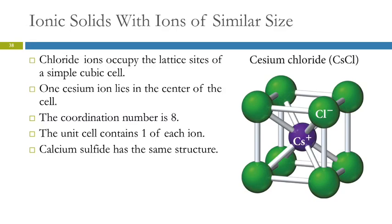Let's look at ionic solids where the ions are similar in size. An example is cesium chloride. The cesium ion and the chloride ion are similar in size, so we can put those together in a lattice and they can occupy the sites of a simple cubic lattice. We've got one cesium atom in the center of the cell and chloride ions at each corner. The coordination number here is eight. The unit cell contains one of each ion — the one cesium ion in the middle and one-eighth of eight different chloride ions — so we have charge neutrality one to one.